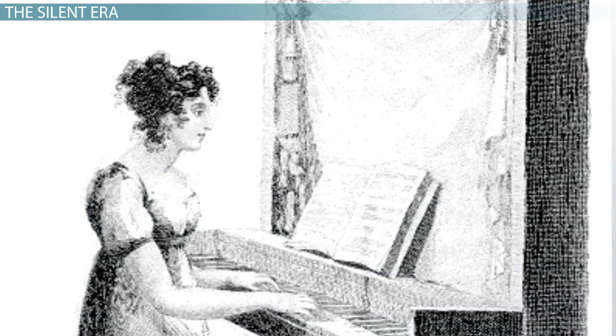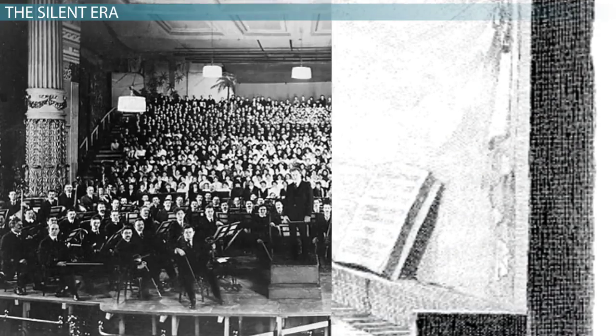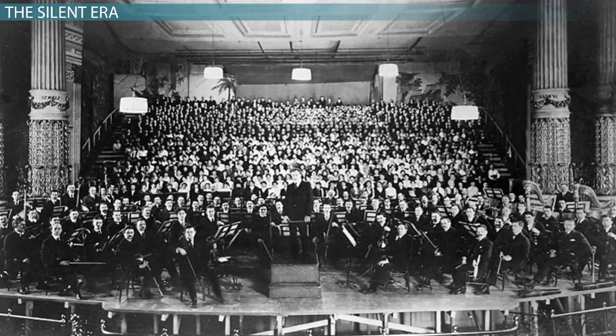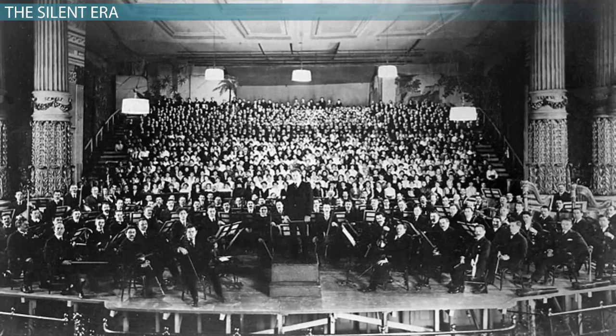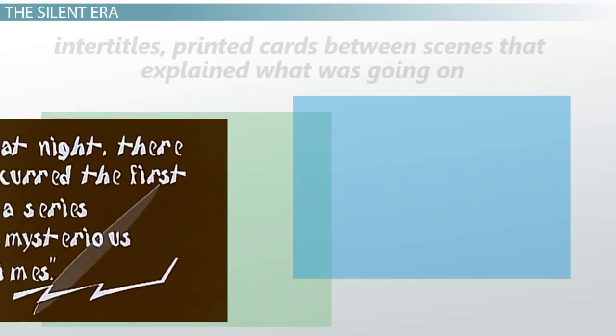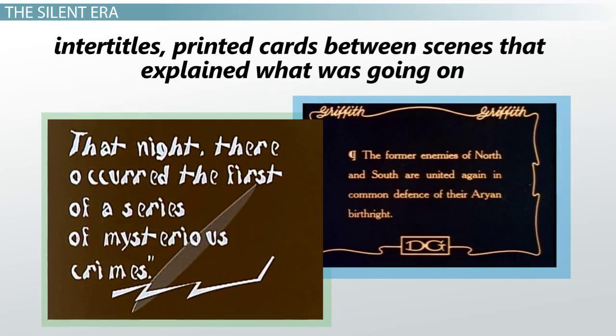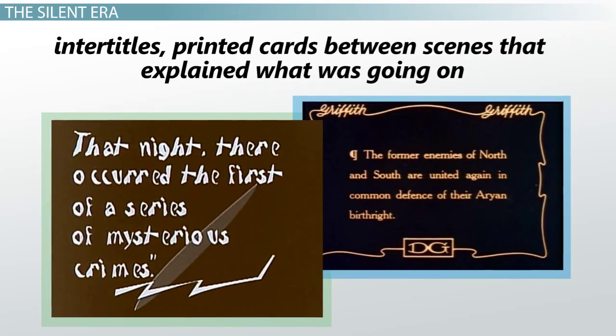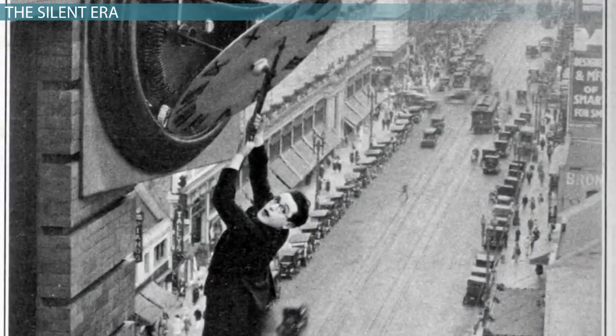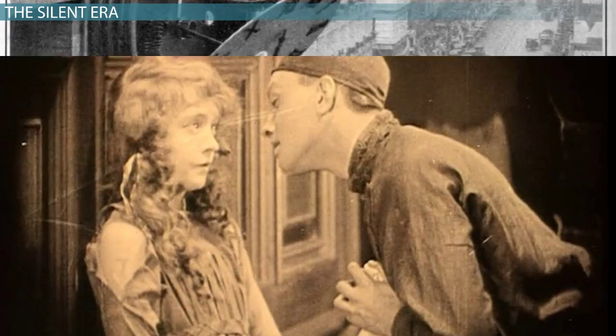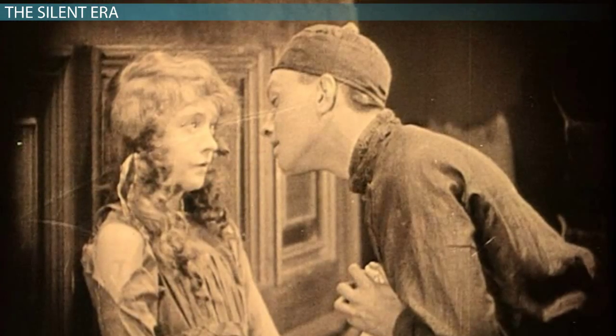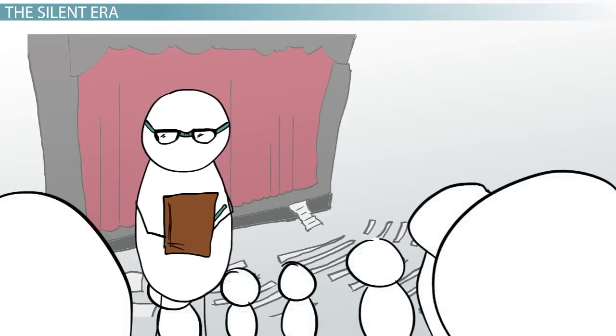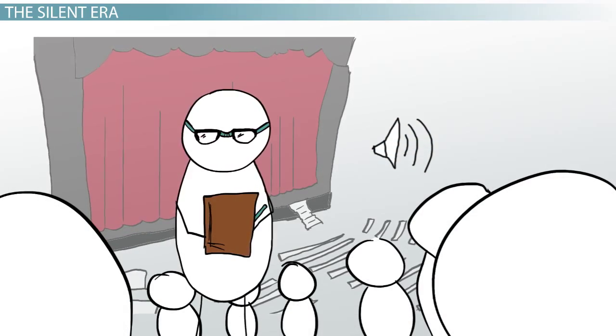Small theaters typically featured a pianist or organist, but larger movie palaces could afford to provide a full orchestra. Sometimes films contained intertitles, printed cards between scenes that explained what was going on, but usually audiences had to rely on actors' gestures and expressions to understand the subtleties of the film. This, however, was about to change with the introduction of sound in films.